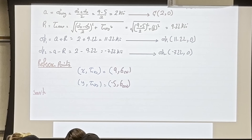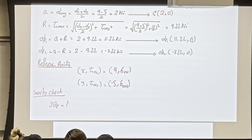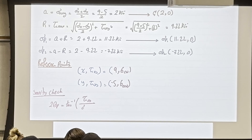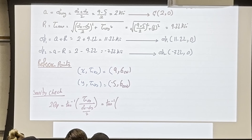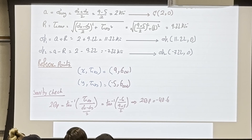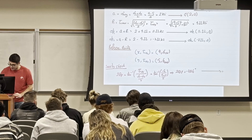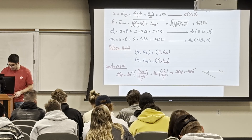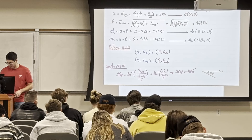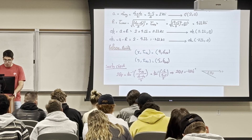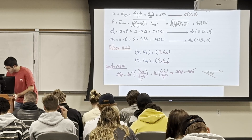The maximum shear occurs at the furthest top and bottom points. The shear value, reading from the graph — or for accuracy, from the radius — is 9.22. At the top: (2, 9.22 clockwise). At the bottom: (2, 9.22 counterclockwise). I'm not saying negative 9.22; I'm saying 9.22 counterclockwise.